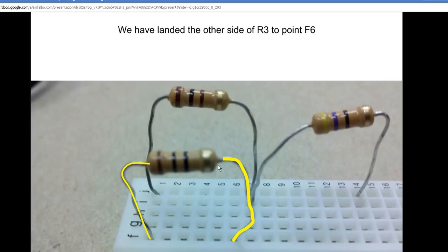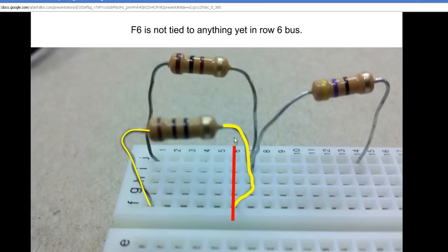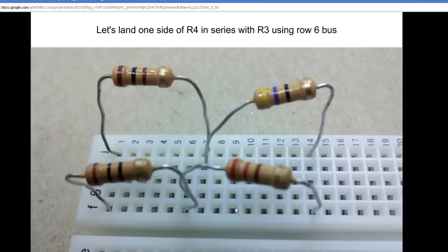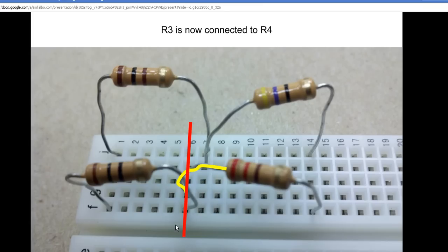The other leg of R3 goes to point F6. Remember, row 6 is all tied together, so we didn't really connect to any other device—we just landed the leg in the breadboard. Now we're going to connect R4 to G6.